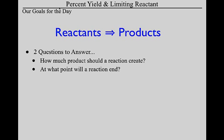The second thing we're going to figure out is when does a reaction stop? We understand that reactions don't go on forever. The answer has to do with what we call limiting reactants. So question one: how much product should we create? And question two: when does the reaction end? We're going to deal with these one at a time.